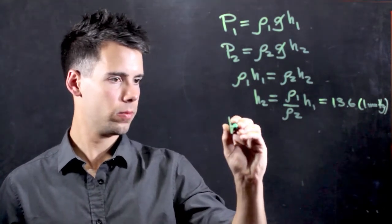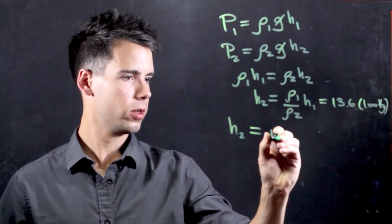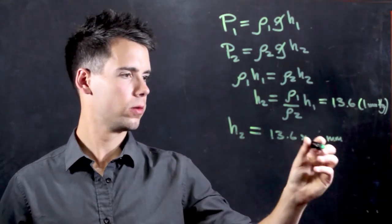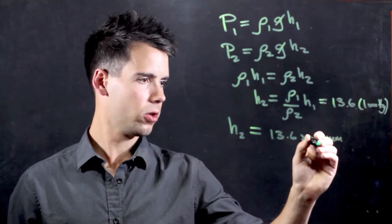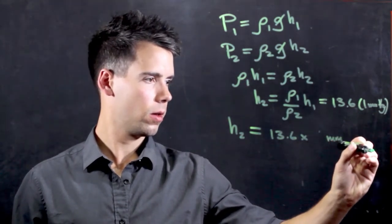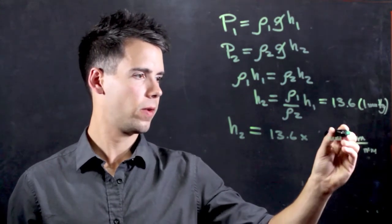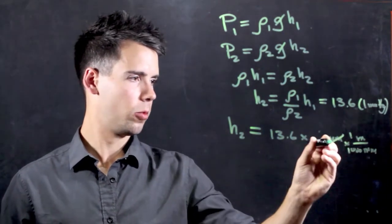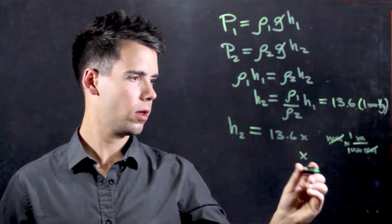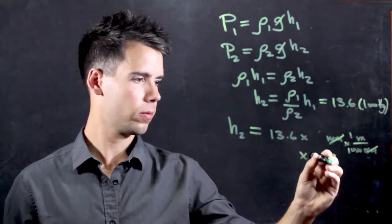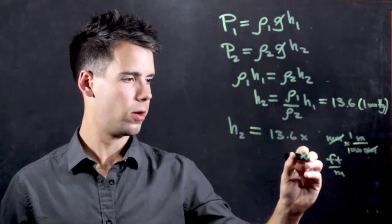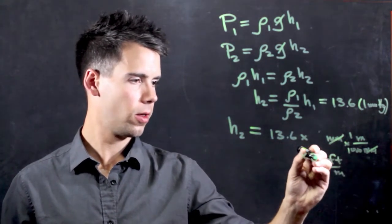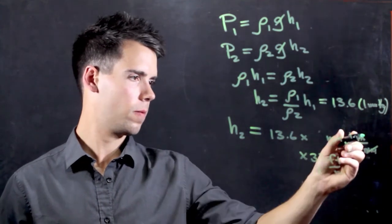So, H2 is equal to 13.6 times millimeters, and if we multiply by meters over millimeters, we find that 1,000 millimeters are in one meter. The millimeters cancel, and we can also multiply this by feet per meter. And we know that in one foot, you have about 0.3 meters, or in other words, 3.3 feet in one meter. And again, meters cancel, and we're left with feet of H2O.